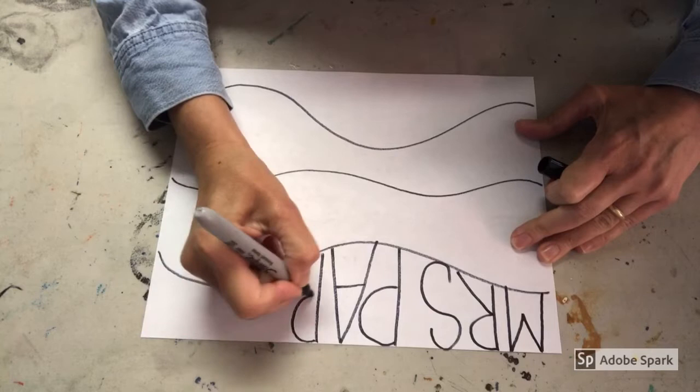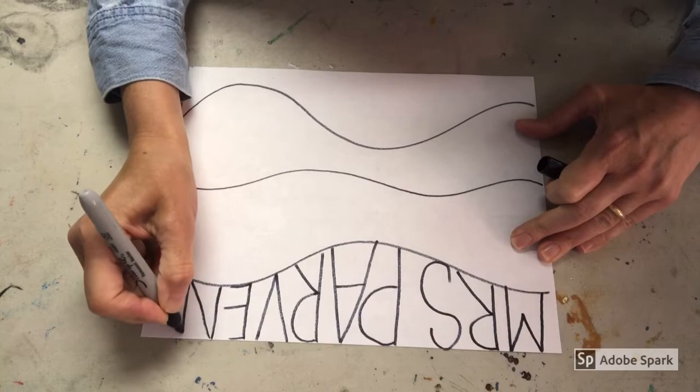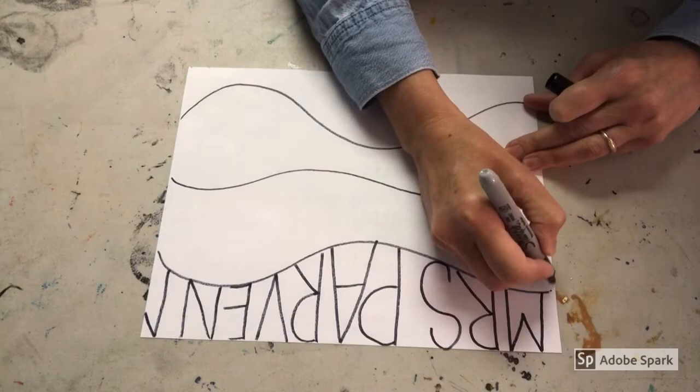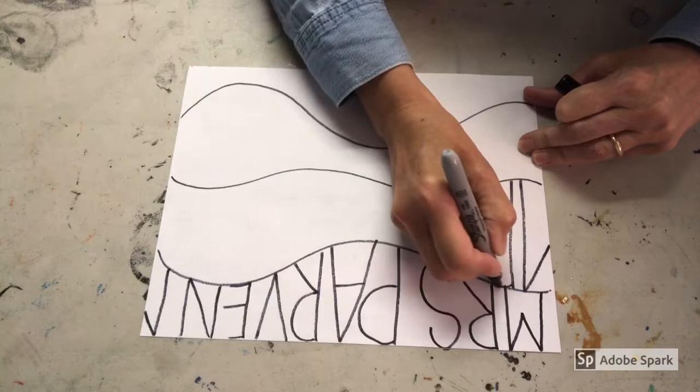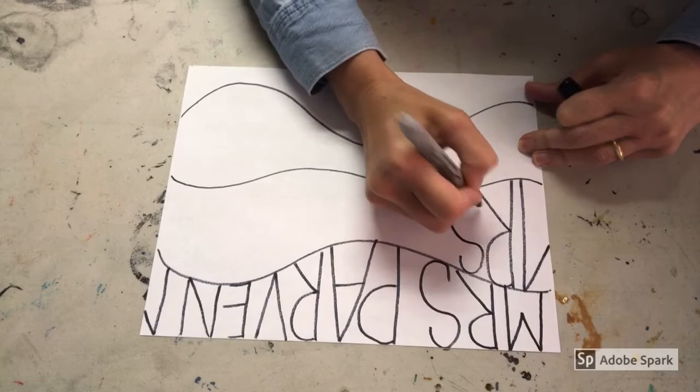You want to fill all the space and keep going across. I've come to the end of the row here and I have room for a little bit of an M, so I'm going to start the M here and then continue it on the next line. You don't have to do that but I think it looks kind of cool. Just keep writing over and over again until all the space is filled.